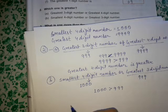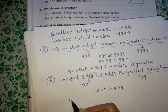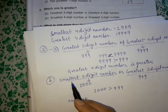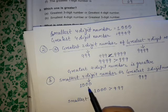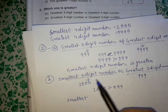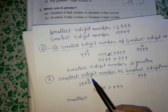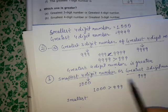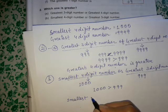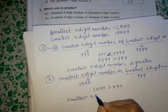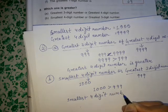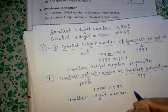1000 is greater than 999. Even though 1000 is the smallest 4 digit number, it has more digits than 999, so 1000 is bigger. Therefore, the smallest 4 digit number is greater.